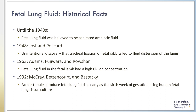A series of discoveries in the mid-20th century changed the belief that fetal lung fluid was simply aspirated amniotic fluid. The first discovery was unintentional: while ligating fetal rabbit tracheas to investigate the development of the pituitary adrenal axis, Jost and Policar discovered that the fetal lungs were distended with fluid. Moving to the 1960s, Adams, Fujiwara, and Roshan learned that the fetal lung fluid in the lamb had a markedly higher chloride ion concentration than that of the plasma or amniotic fluid.